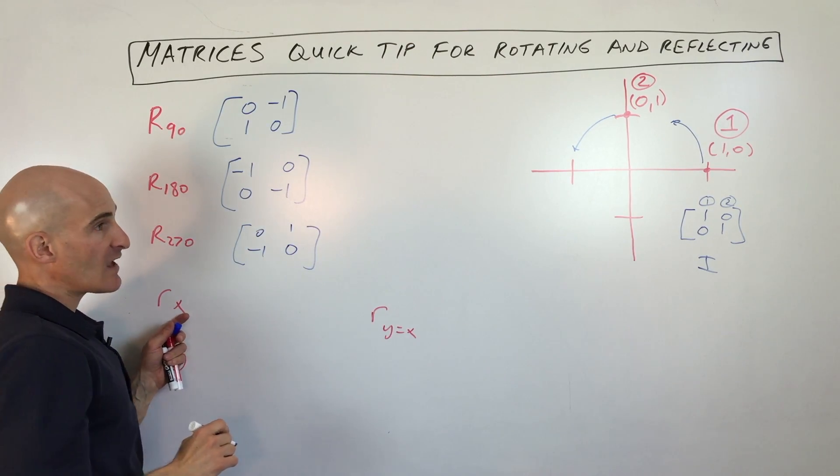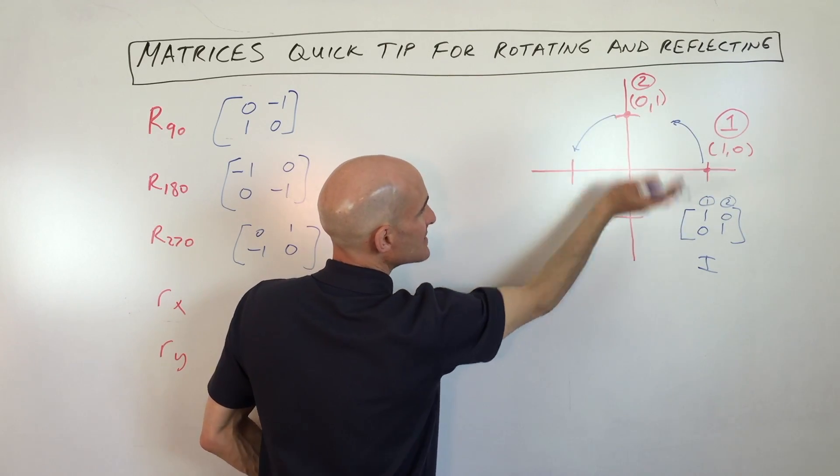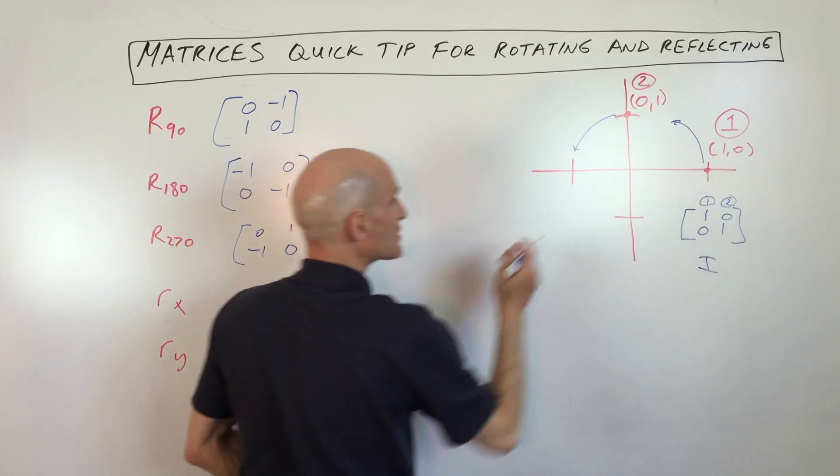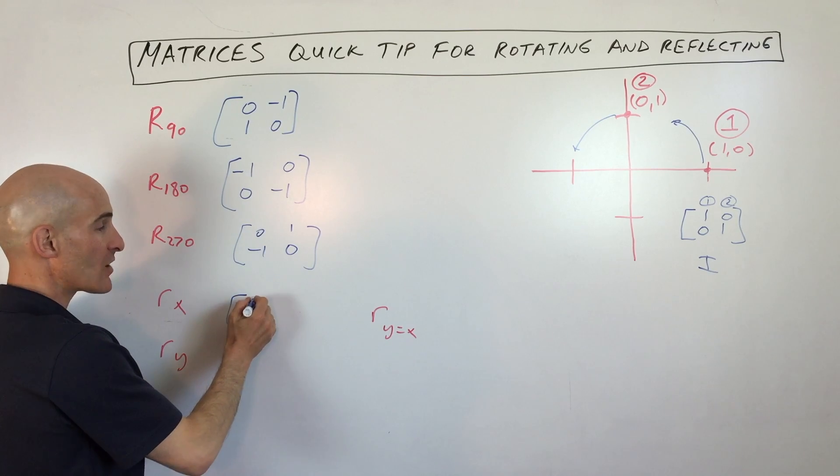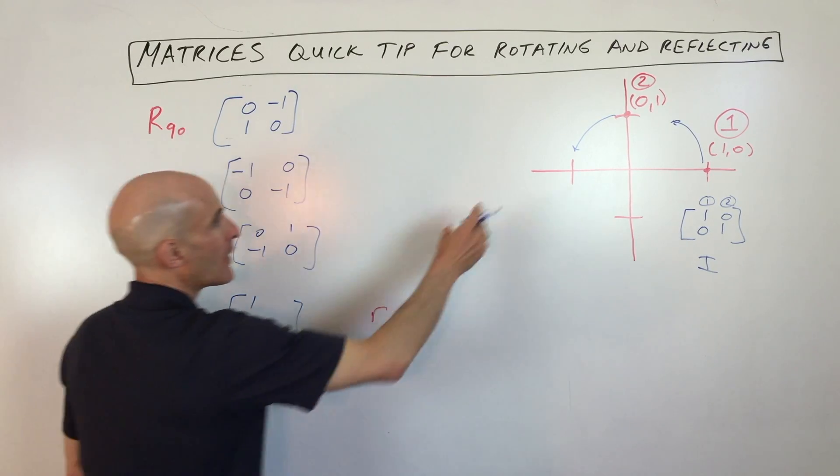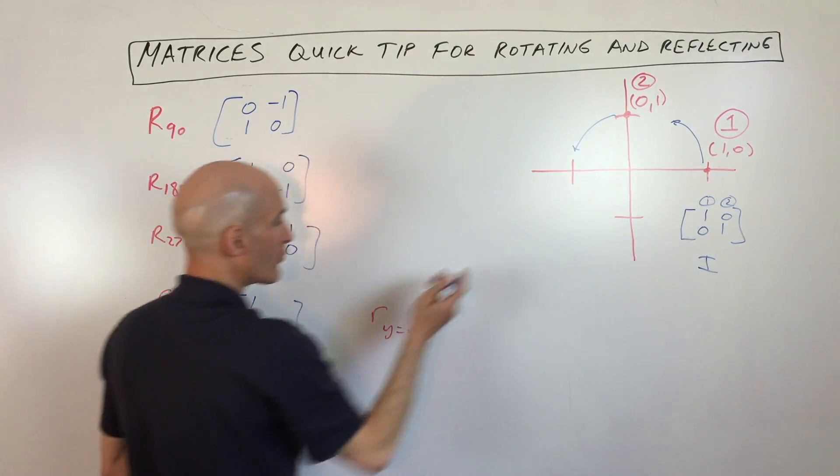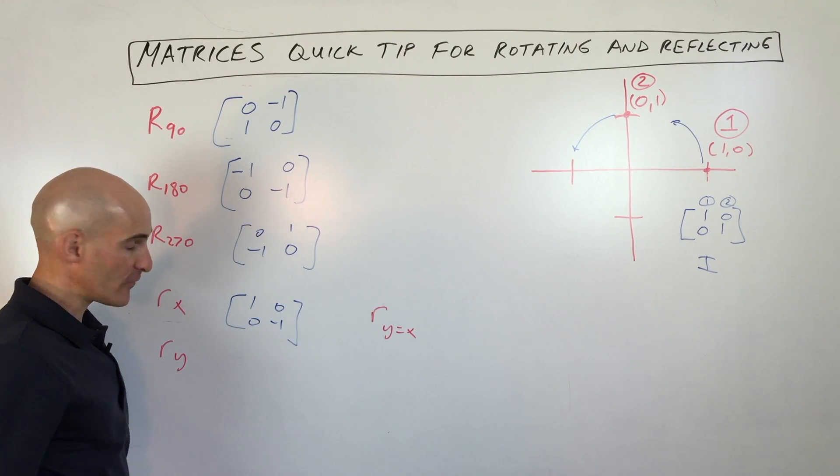Now if you reflect over the x-axis, we're folding it over the x-axis, the mirror image. This point is actually on the line of reflection, so it's going to stay right where it's at, one, zero. Whereas this point is going to reflect down there at zero, negative one. So you're with me so far?